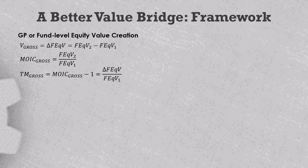So we'll start with the GP or fund level equity value, FEqV, and see how that changes over time. Absolute value creation, V, is simply the change in FEqV, and from that you can get other value creation measurements like the gross multiple of invested capital, times money, or the gross IRR. Now because FEqV changes over time, it's a function of time, and we indicate that with this sub-T term.